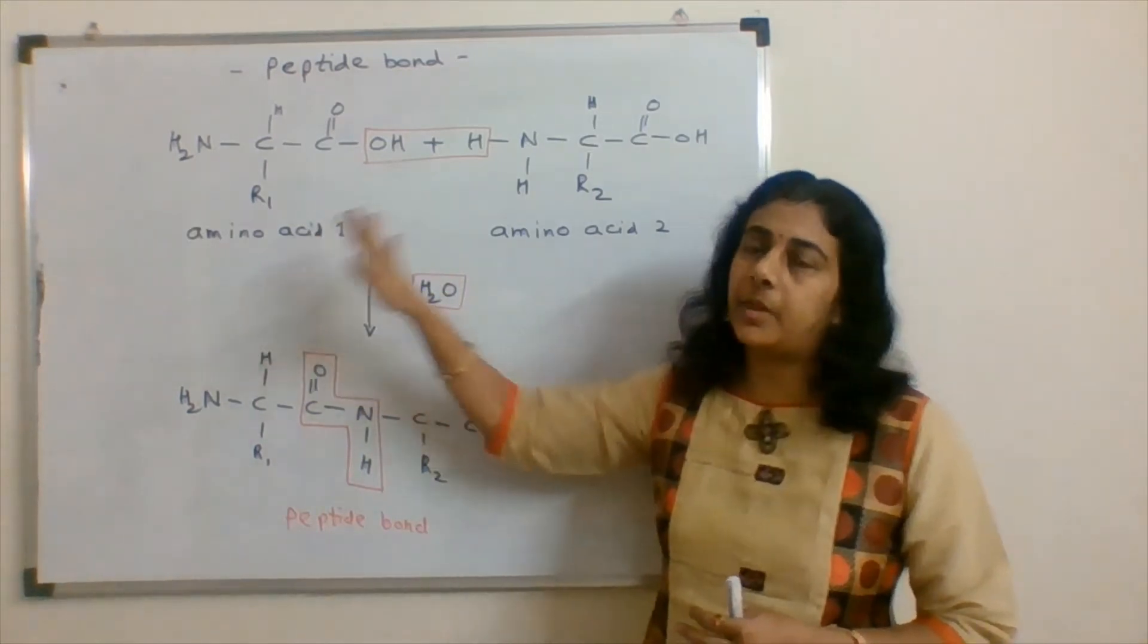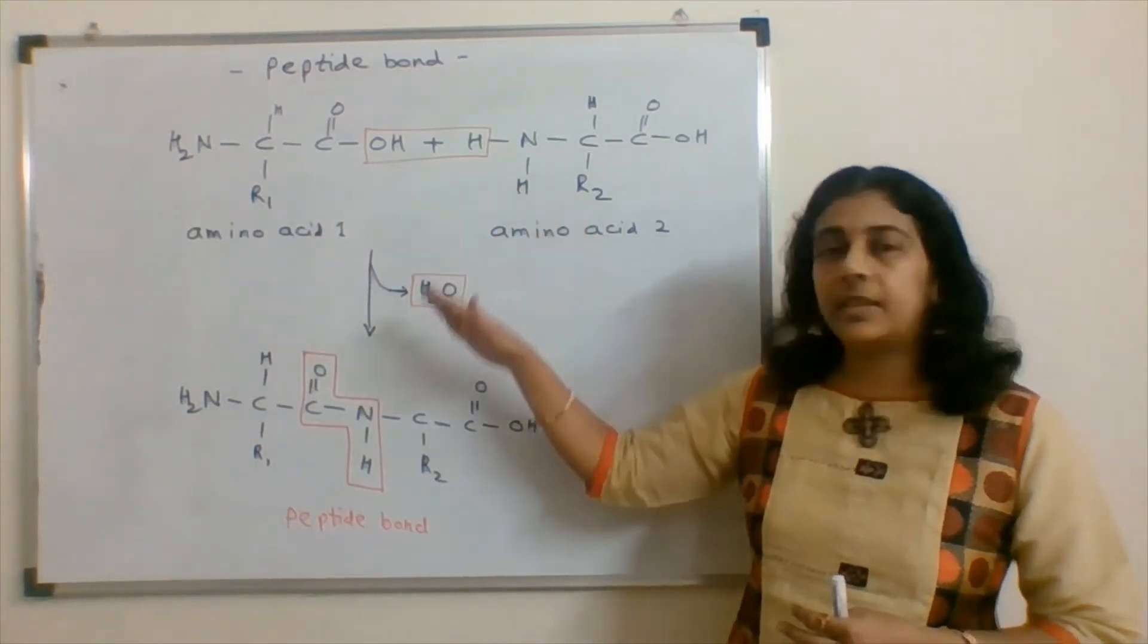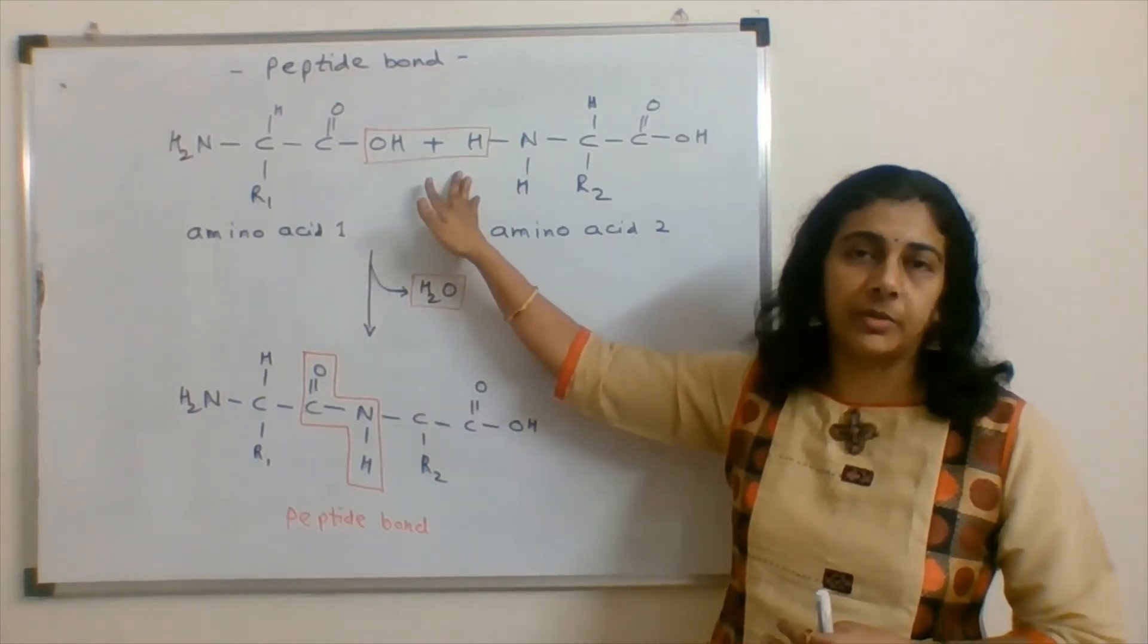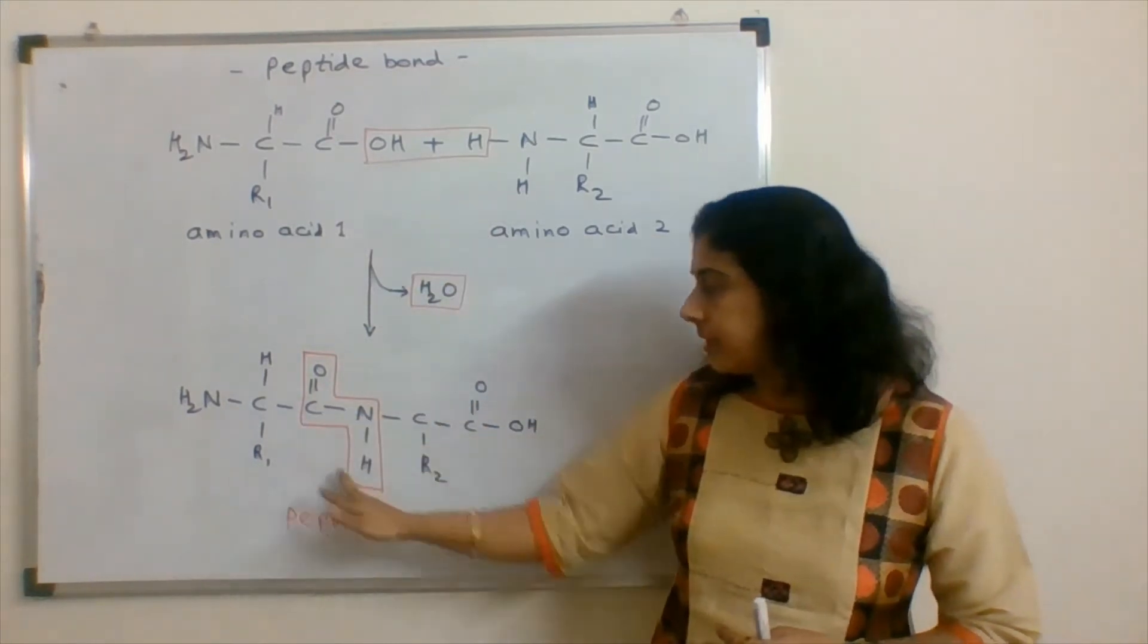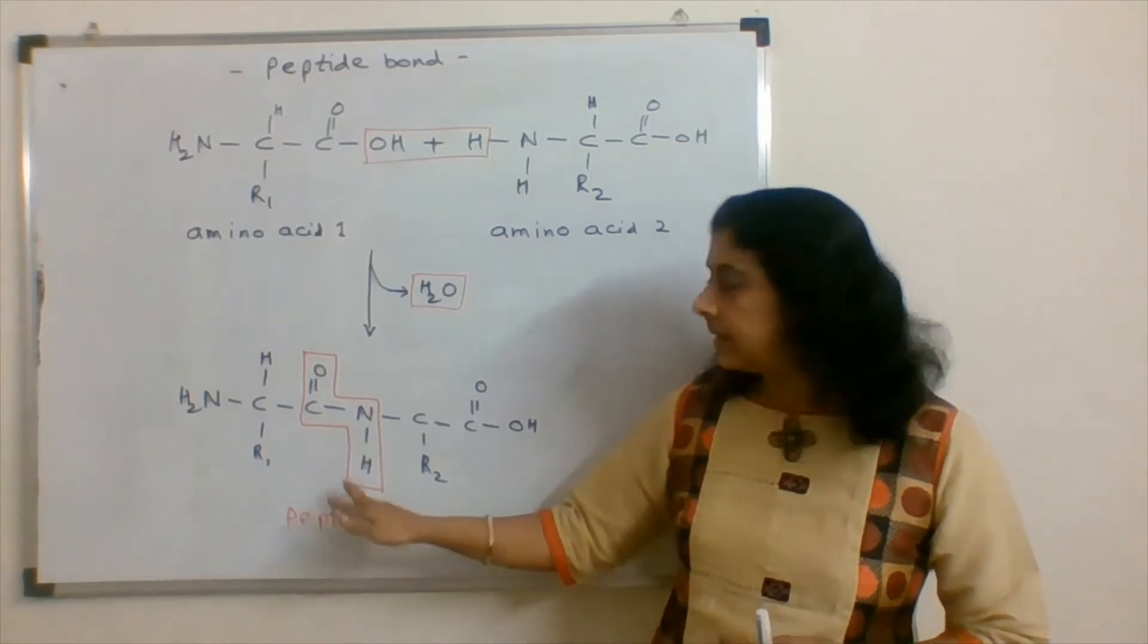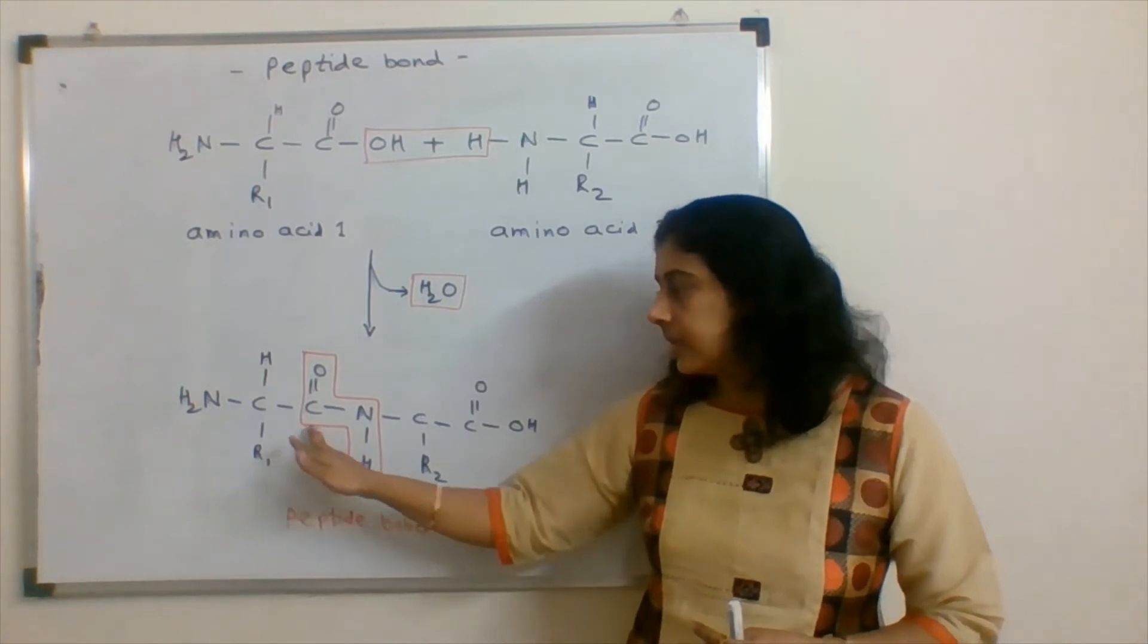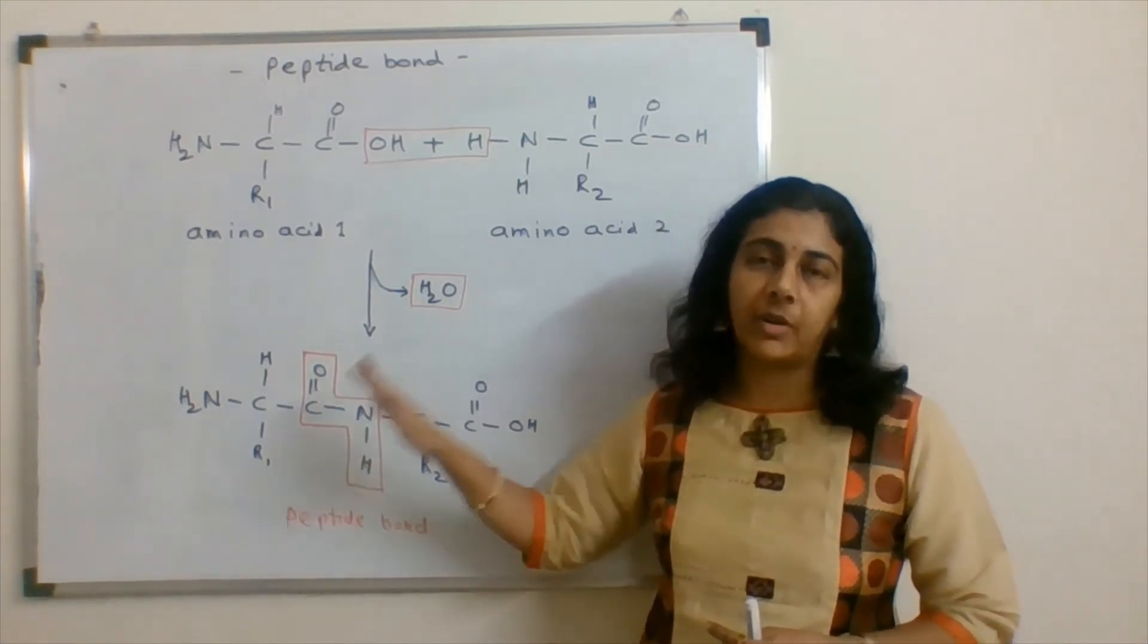it is formed between two amino acids, amino acid 1 and amino acid 2. When these are linked together, there is a liberation of water molecule and the formation of peptide bond. This is a CN, O, C double bond O and NH. This bond is a peptide bond.